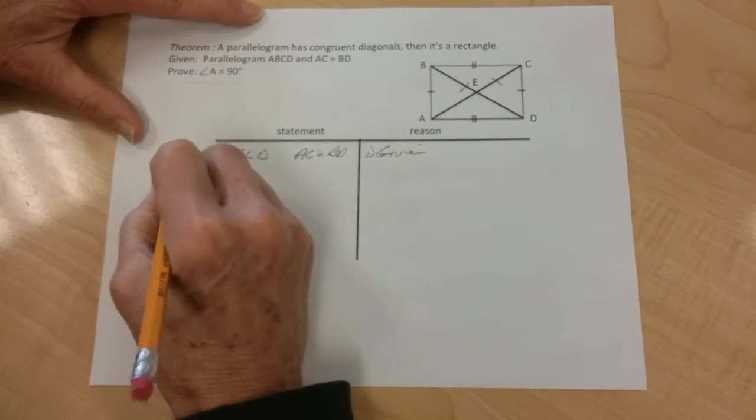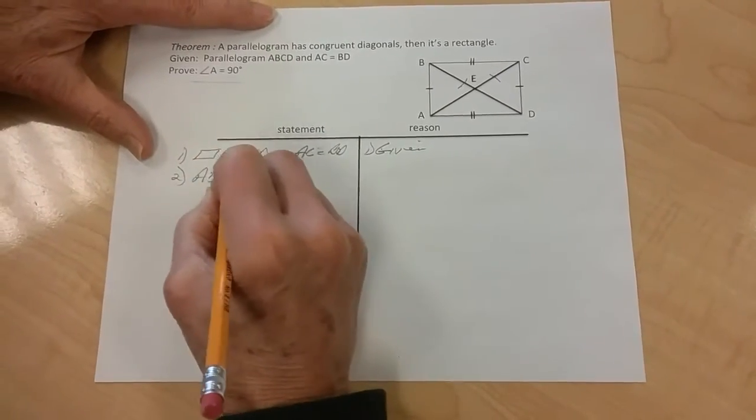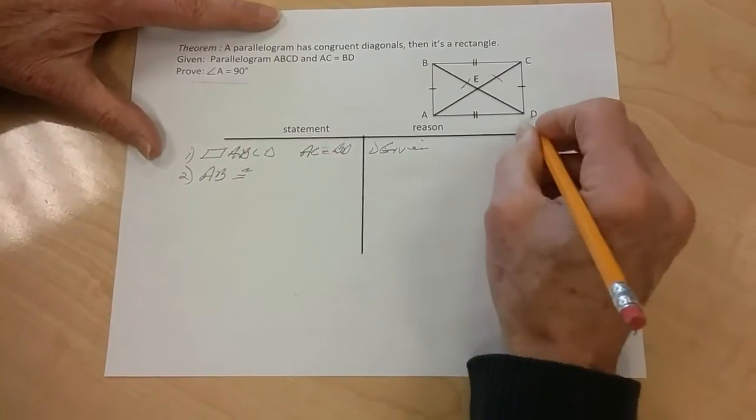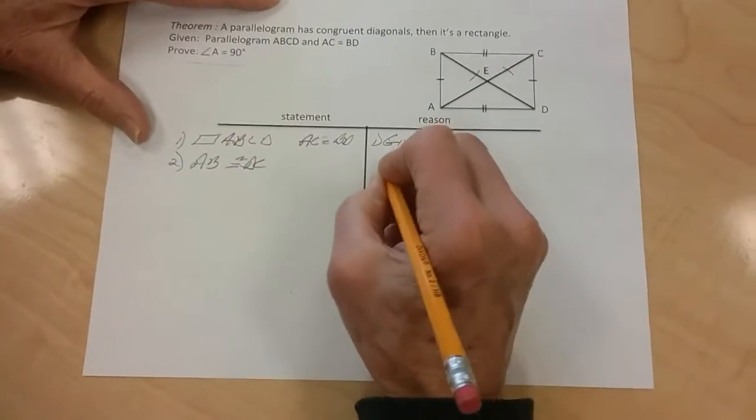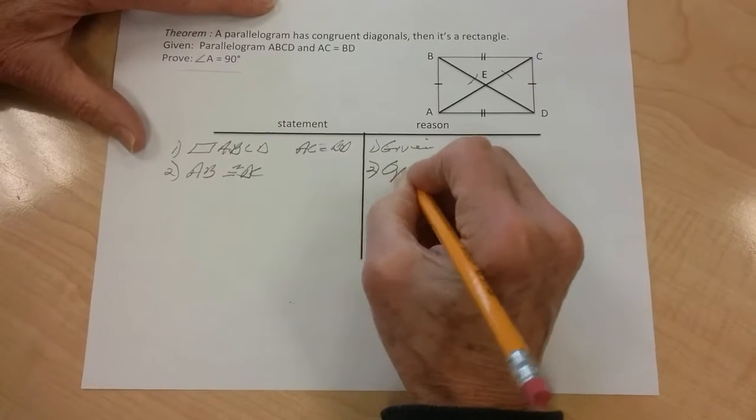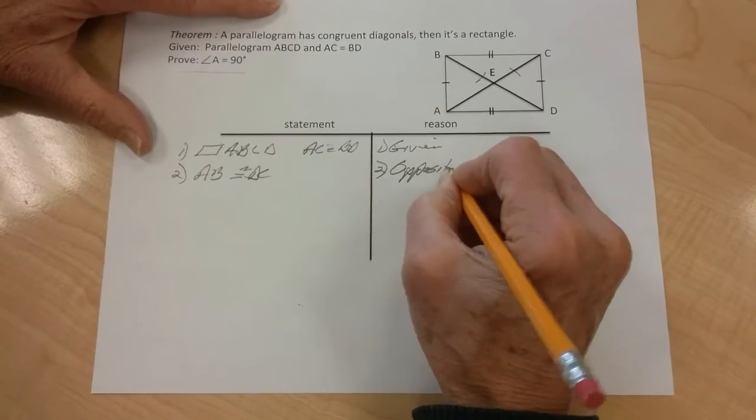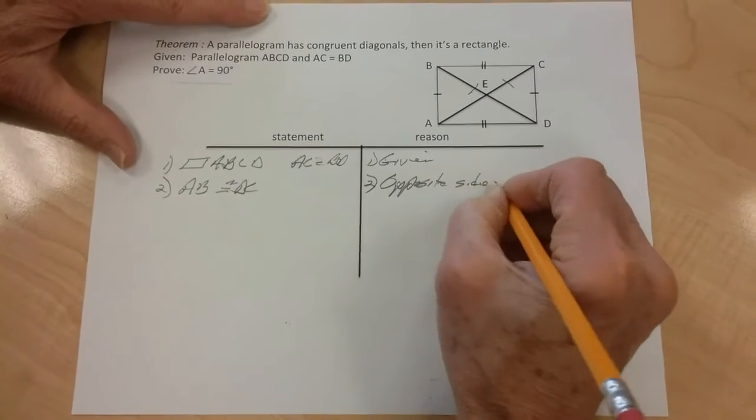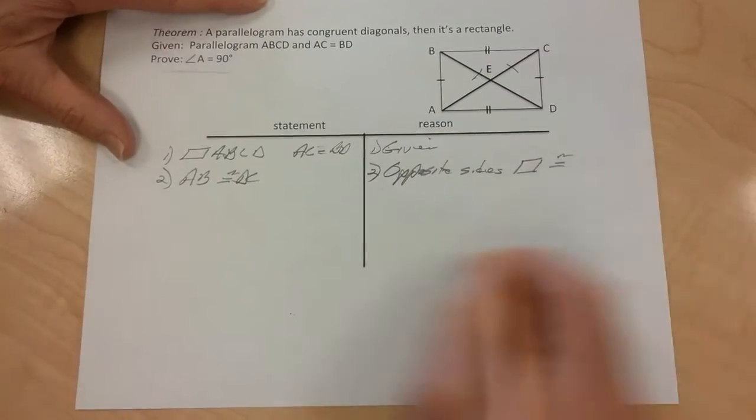And two, we're going to establish right here that AB is going to be congruent to DC because opposite sides of a parallelogram are congruent. All right, number two.